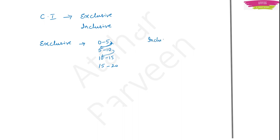In inclusive class interval, how does it look? It will be like this: 0 to 5, the next interval will not start from 5 — it will not be 5 to 10. It will be 6 to 11. After 5 comes 6, so that will be there. After 11 comes 12, so next interval will be 12 to 17, and so on. If this type of class interval is there, then it is known as inclusive class interval.